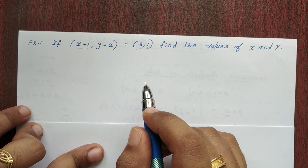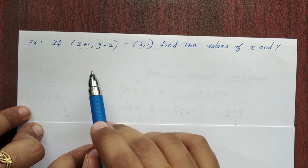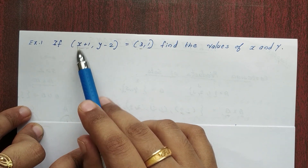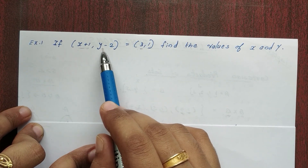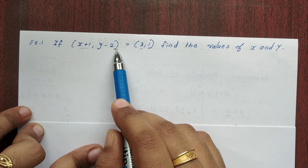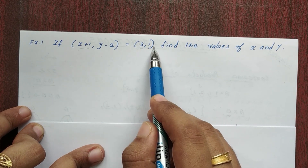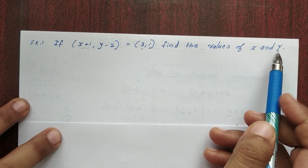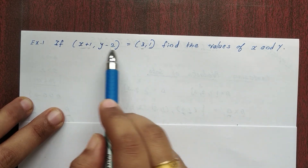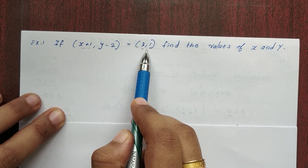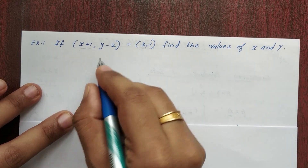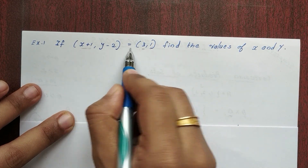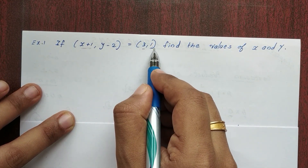Let's see the first example. If ordered pair (x+1, y−2) is equal to (3, 1), find the values of x and y. So what we are learning: two ordered pairs are equal here. (x+1, y−2) = (3, 1).